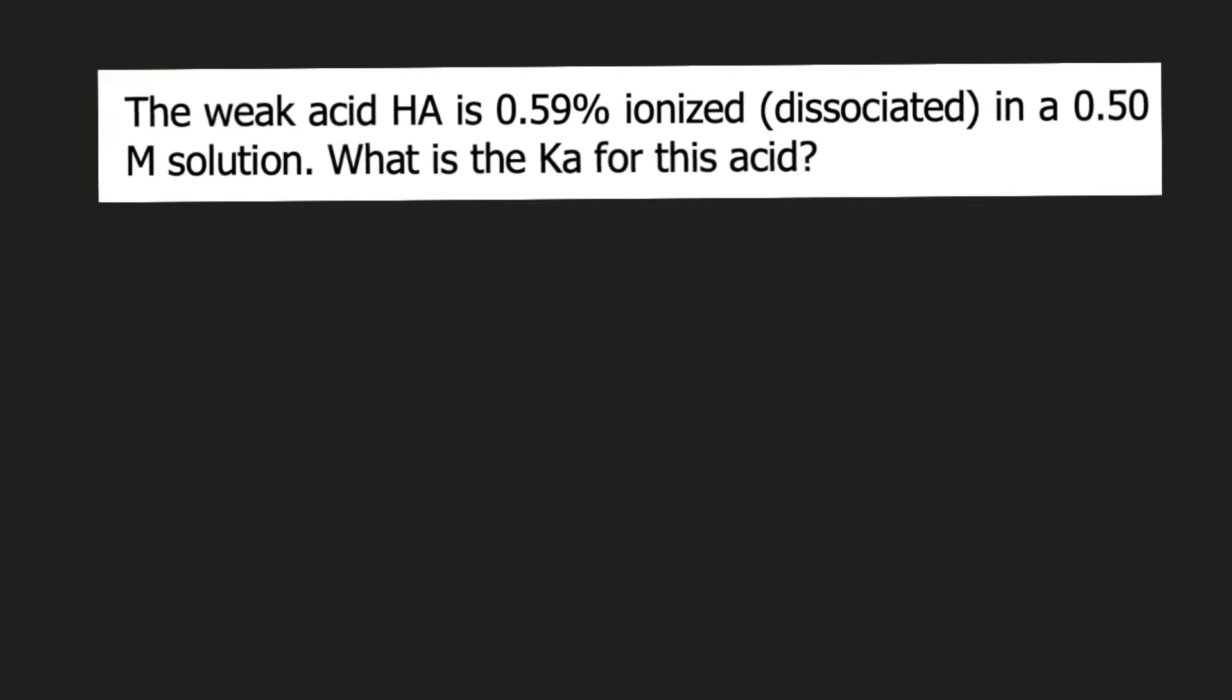If you are given percent ionization, you can compute Ka using this equation: Ka equals alpha squared times C divided by 1 minus alpha. Let's define the variables in the equation.